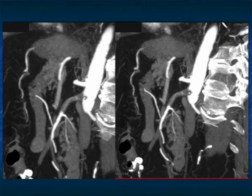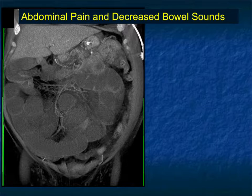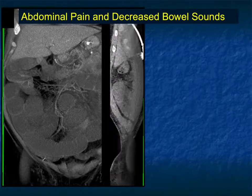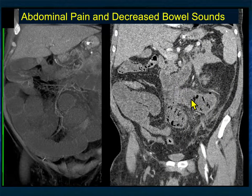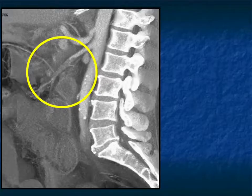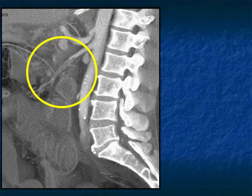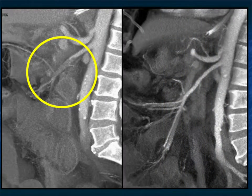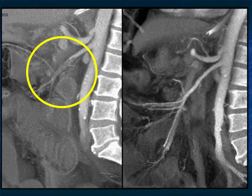Here's a nice example with significant proximal SMA occlusion nicely shown on MIP imaging, and also thrombus distally in the SMA. Another patient: the bowel is dilated but not enhancing well post-IV contrast — it looks like a non-contrast scan. On sagittal view, the SMA and celiac look great at their origins, but the SMA has extensive thrombus about five centimeters down. The patient went to surgery, the thrombus was removed, and here's the patient a week later. You need to see the thrombus and how extensive it is — it's not in the proximal vessel and easy to overlook.